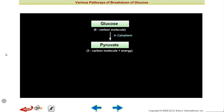Glucose will break down in the cytoplasm to form pyruvate, which is a 3-carbon molecule.